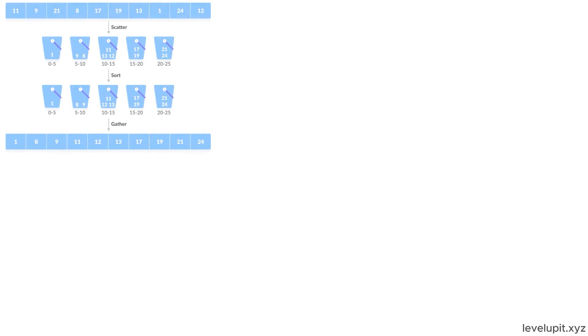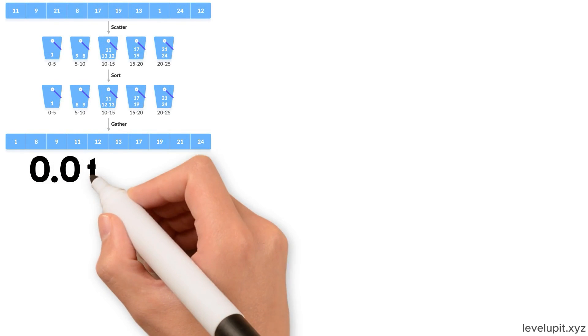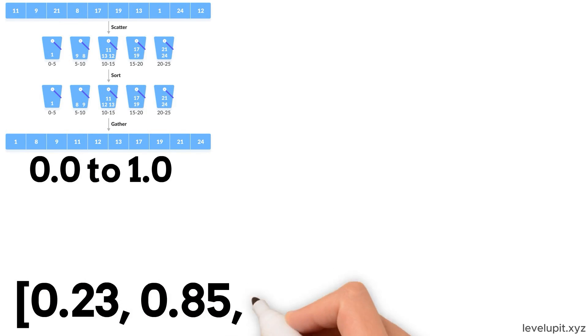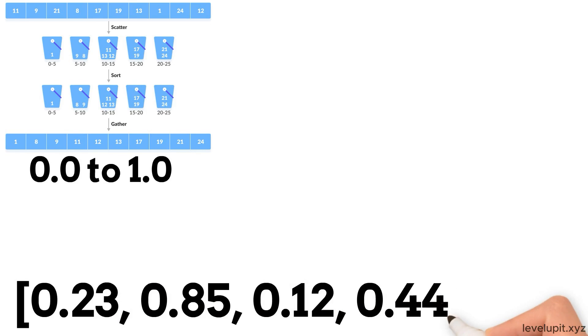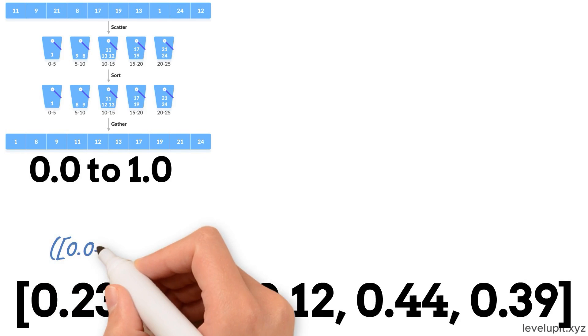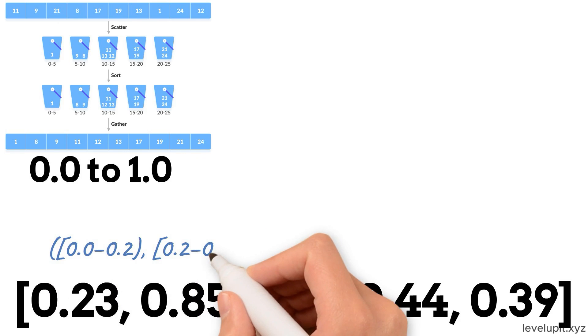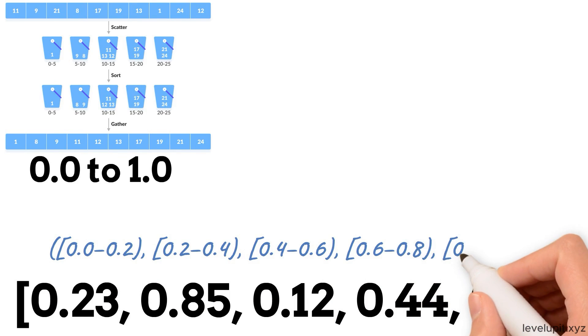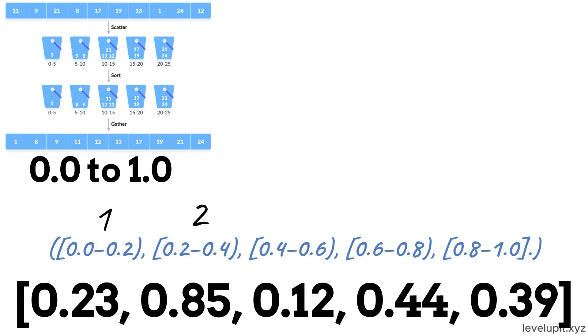Bucket sort is helpful when numbers are uniformly spread over a range like 0.0 to 1.0. For example, 0.23, 0.85, 0.12, 0.44, 0.39 can be placed into buckets: 0.0 to 0.2, 0.2 to 0.4, 0.4 to 0.6, 0.6 to 0.8, 0.8 to 1.0. So 0.12 in bucket 1, 0.23 and 0.39 in bucket 2, 0.44 in bucket 3, 0.85 in bucket 5.